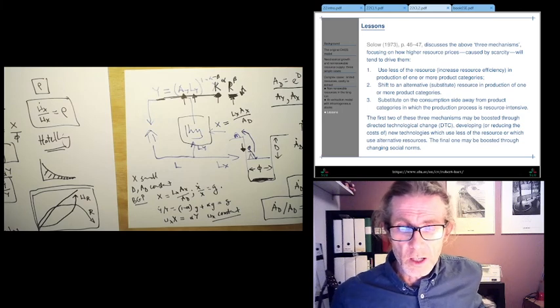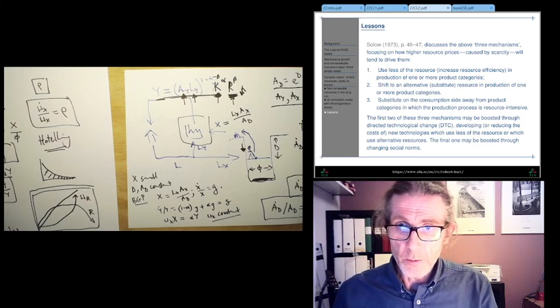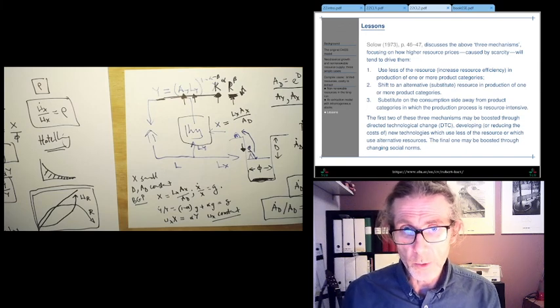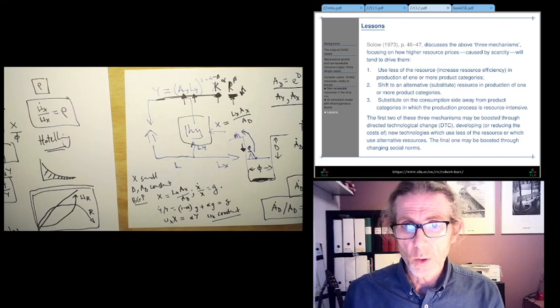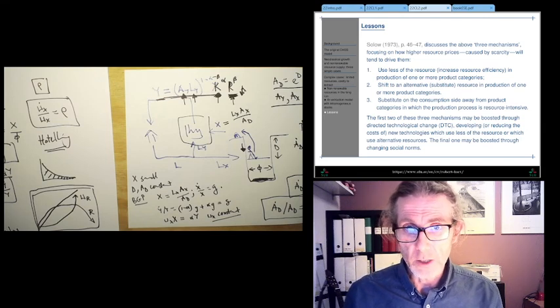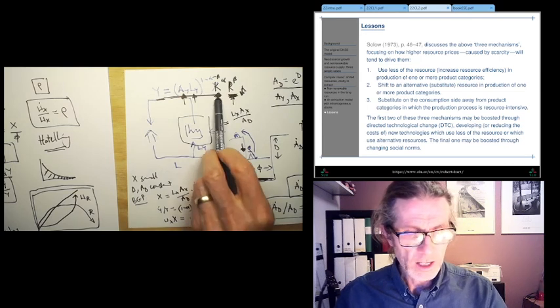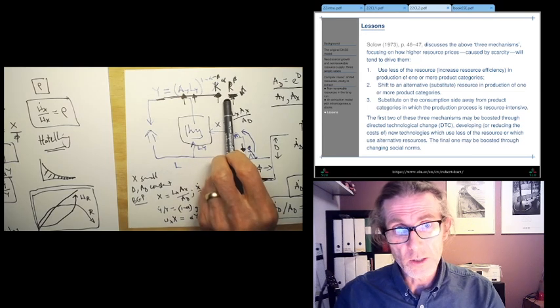So when Solow was just in this paper from '73, he didn't have any math, he was just talking about what might be important. He raised these mechanisms among other things. When he had to do the math, he came up with something completely different, which was all about the idea that we could have more ovens, so to speak, increase capital.